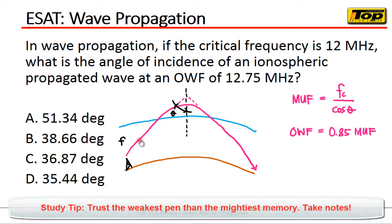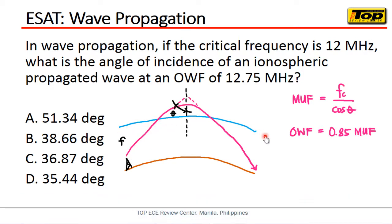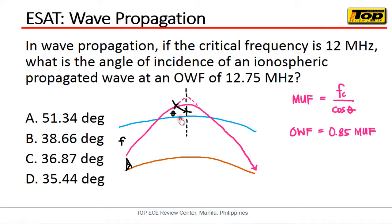Let us say we have an ionospheric propagation. Of course, this is the ionosphere. When the signal reaches the ionosphere, it bends and comes back to Earth. And thus, we have what we call the MUF, or the Maximum Usable Frequency. The MUF uses the critical frequency — this is the highest frequency that, when propagated straight upward, will still return to Earth. It will be propagated at an angle using the MUF, and that angle is called the incidence angle — the angle formed by the signal and the normal line with respect to the ionosphere boundary.